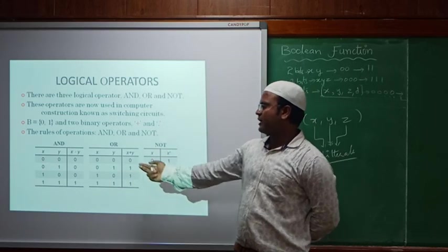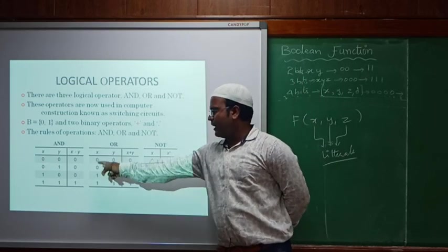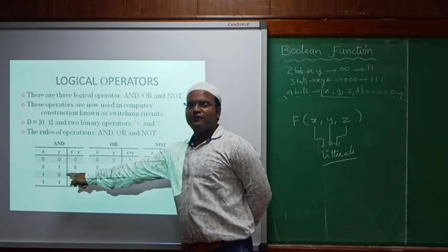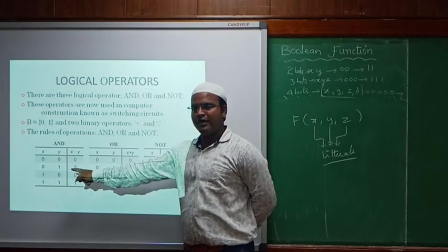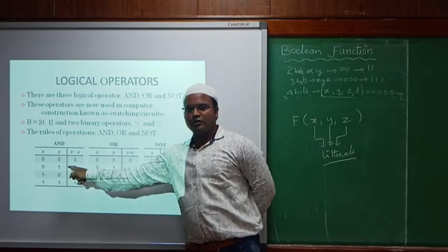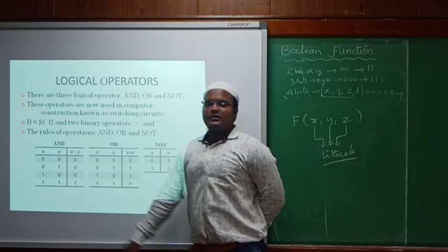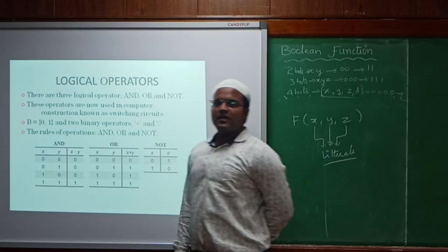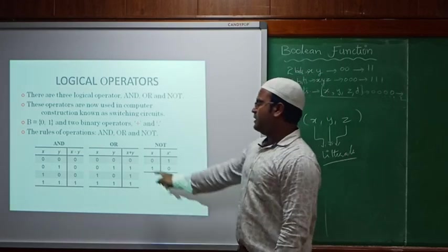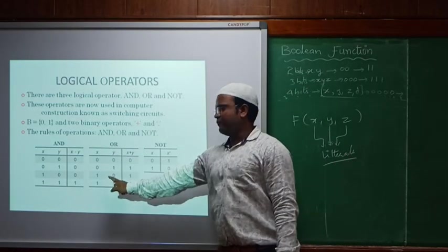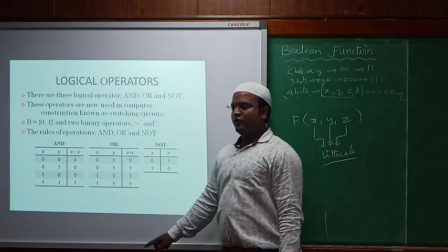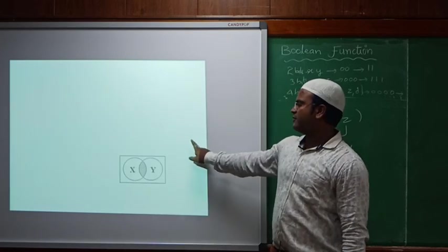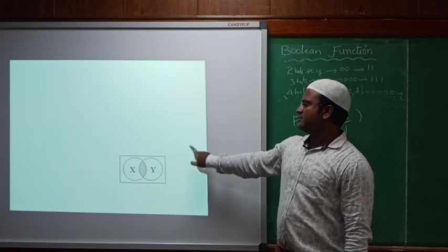We have discussed logical operators AND, OR, NOT and their combinations. AND means multiply: 0 × 0 = 0, 0 × 1 = 0, 1 × 0 = 0, 1 × 1 = 1. This is the product term. Similarly, OR means addition: 0 + 1 = 1, and so on — these are the sum terms.